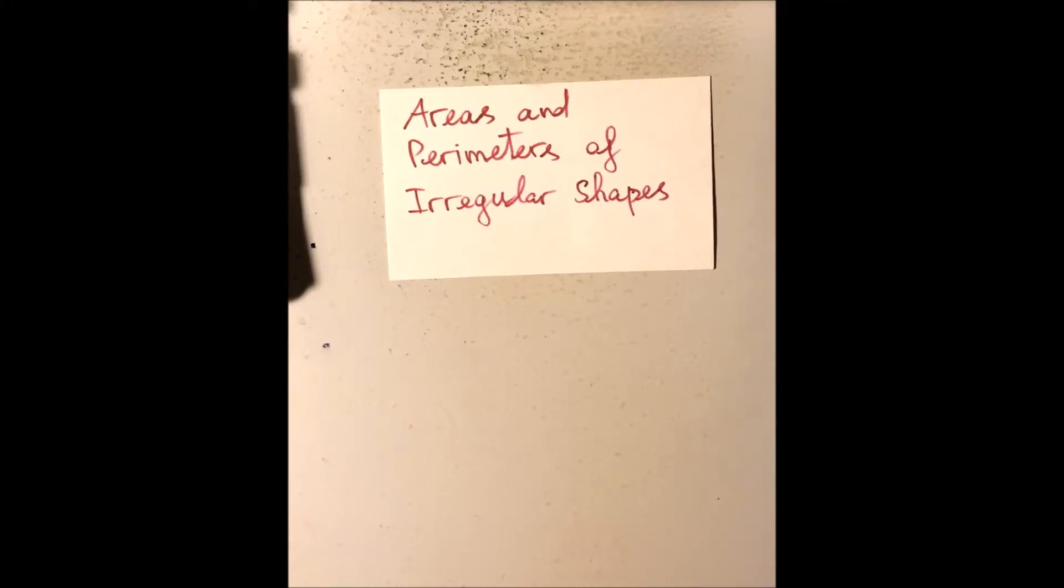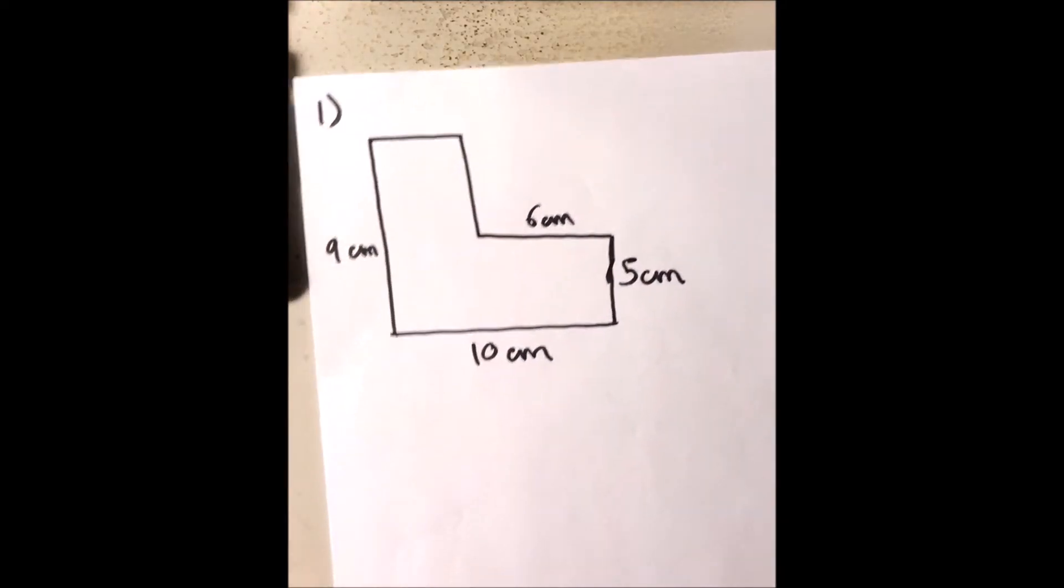In this video I want to go over how to find the areas and perimeters of irregular shapes. Irregular shapes look something like this.